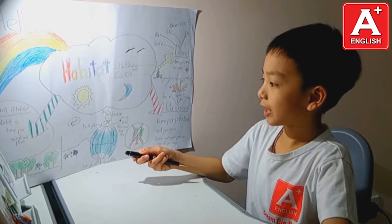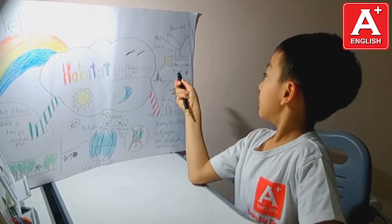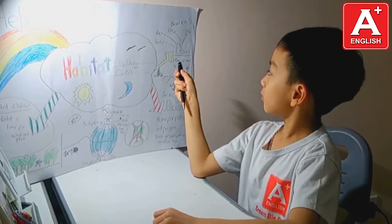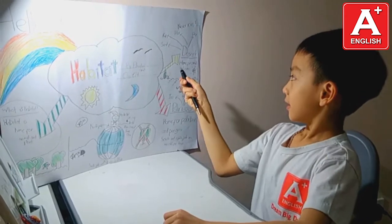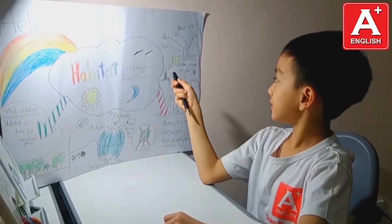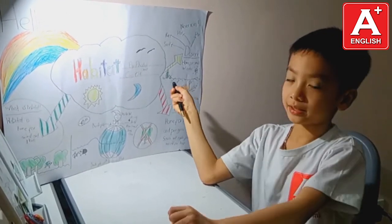A habitat is a home for animals and plants. Some of them, like the desert, never get rain. That's why it is hot and very dry, and there are many rocks and sand. In the desert, it's home for camels and cactus.